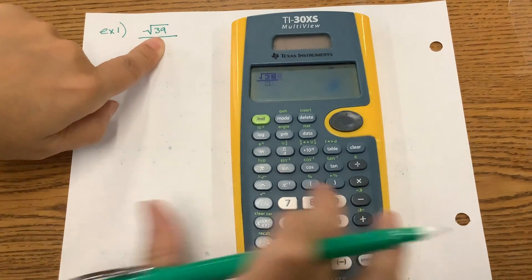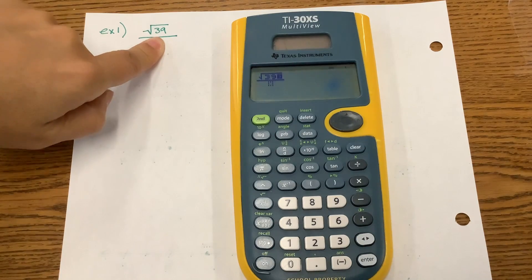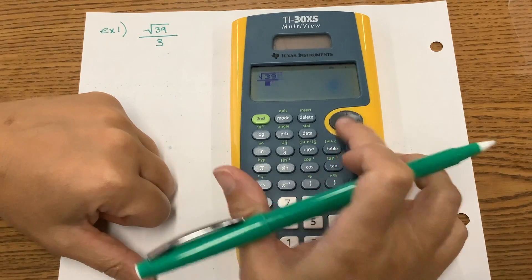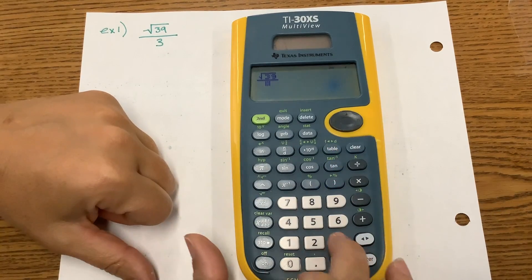Go ahead and place in the numbers 39. And then we will move down to the denominator by pressing our arrow key downward and just put in the number 3.